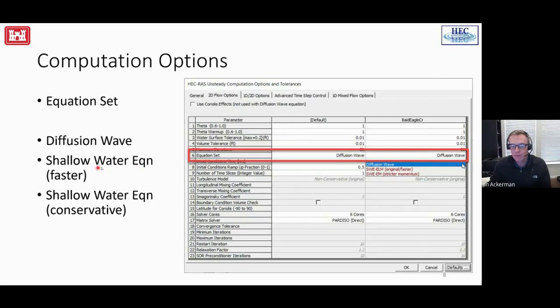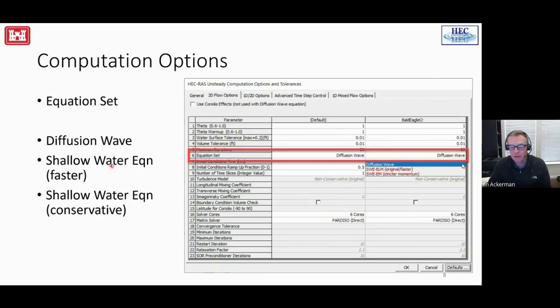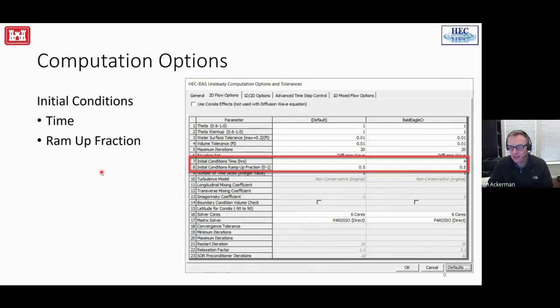If you choose shallow water equations, in the next release of RAS there are now two versions: the original set which is faster, and a new shallow water equation in more conservative form that is stricter with momentum and gives better answers. This is typically used for flume studies and dam break analyses where you're trying to track the front of the flood wave more precisely or at a hydraulic jump. For most river hydraulic conditions, the original faster shallow water equation gives good enough answers.